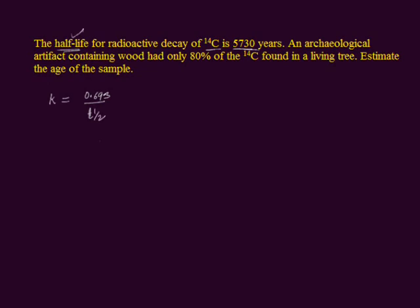Its value is given here. We can plug in and find out the rate constant: 0.693 divided by T half value is 5730 and unit is years. We mentioned unit year.